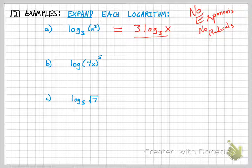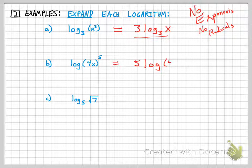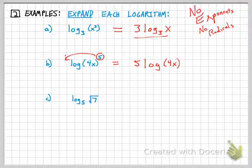That exponent can be moved out in front, so that's equivalent to 5 log of 4x. And basically you can see that we're just throwing that out in front, and that's what the power rule enables us to do. All right, third example.